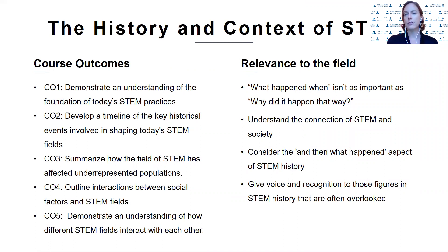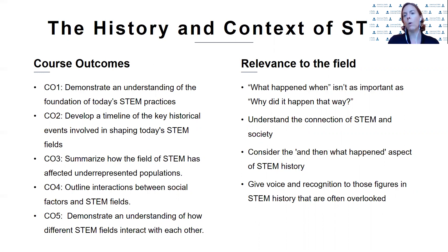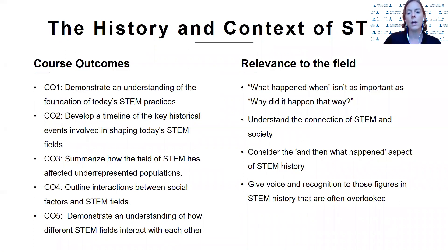You will work to develop a timeline over the course of this class, but you will also be focused on those events in context of society and also focused on the contribution of those underrepresented populations. So really in this course, what is not as important is what happened when, but why did it happen that way? We want to understand that connection between STEM and society, and we want to consider the question of what happened next — as one field led to another. And giving voice to those characters who are often not mentioned in the history of STEM is an important piece of this course.